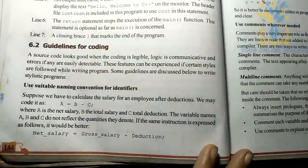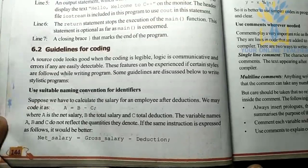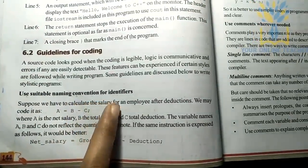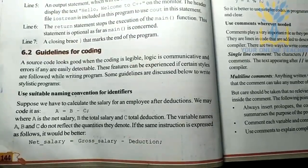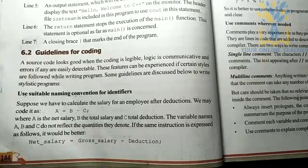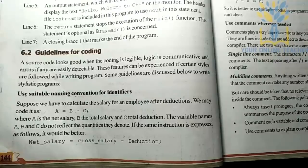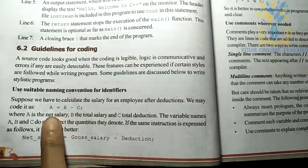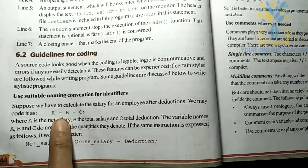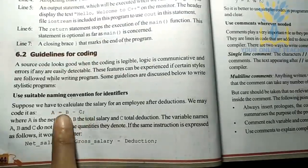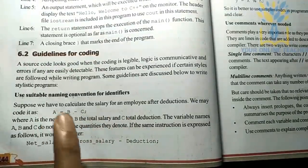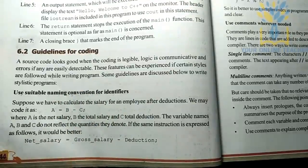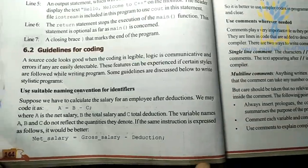Next, you can write guidelines for good coding. The first guideline is: Use Suitable Naming Convention for Identifiers. For example, if you have employee salary and deduction, you can write net salary. If the coding uses A, B, C — where A is Net Salary, B is Total Salary, C is Deduction — we have net salary equals total salary minus deduction. We use mnemonic names like average height, roll number, and net salary. We don't have spaces in the program — we use underscores instead.